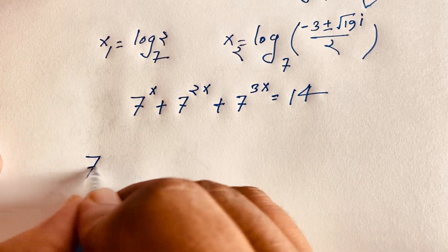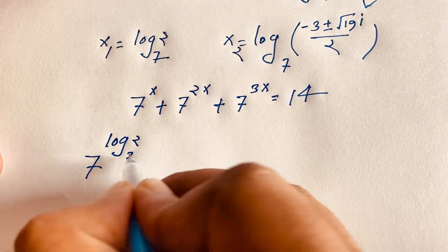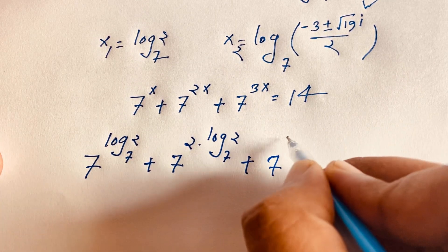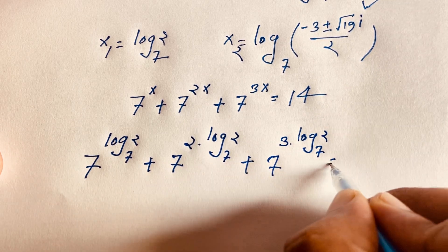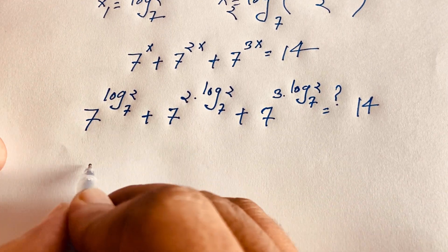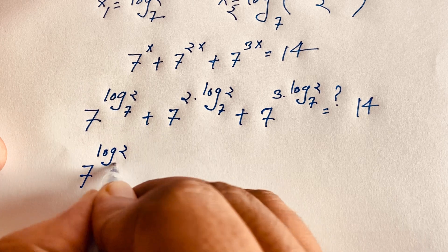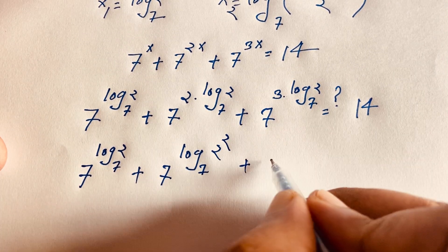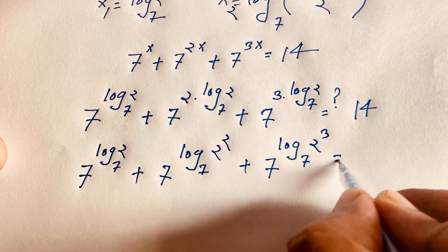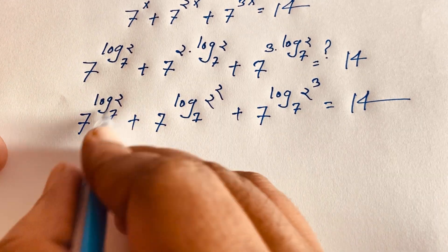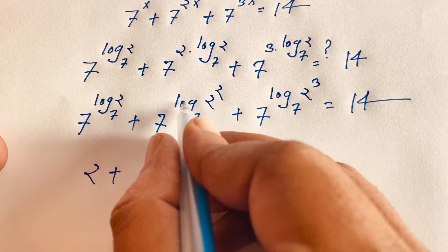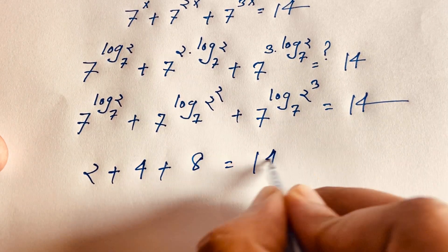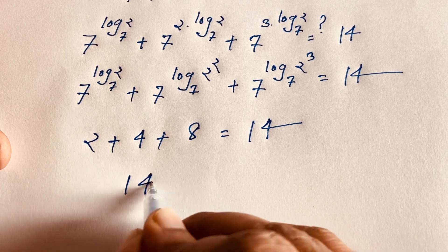Substituting x equals log base 7 of 2: we get 7 to the power (log base 7 of 2) plus 7 to the power (2 times log base 7 of 2) plus 7 to the power (3 times log base 7 of 2). Applying logarithm rules, 7 to the power (log base 7 of 2) equals 2, 7 to the power (log base 7 of 4) equals 4, and 7 to the power (log base 7 of 8) equals 8. So 2 plus 4 plus 8 equals 14. Verified!